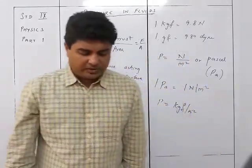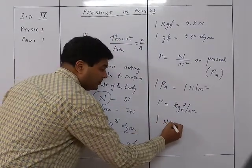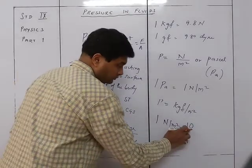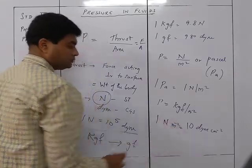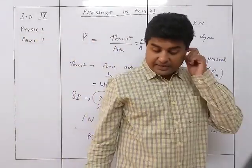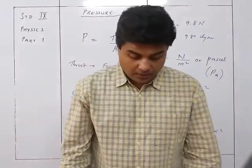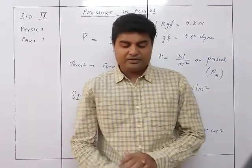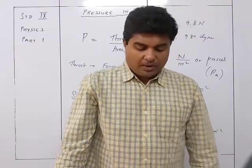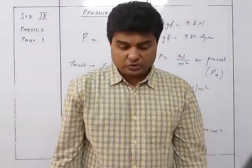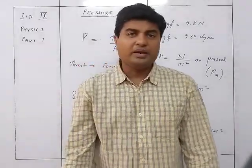Other units of pressure are bar and millibar, where 1 bar equals 10⁵ newton/m² and 1 millibar equals 10⁻³ bar, or 10² newton/m². Bars and millibars are normally used when discussing atmospheric pressure.